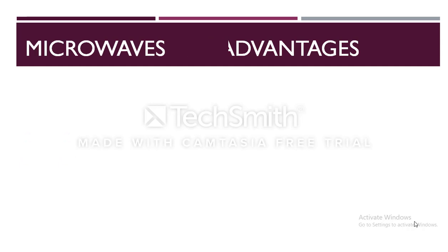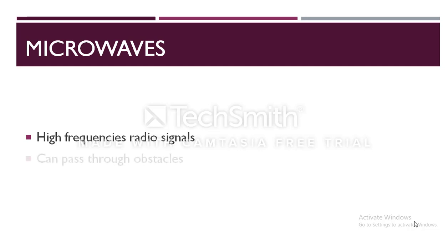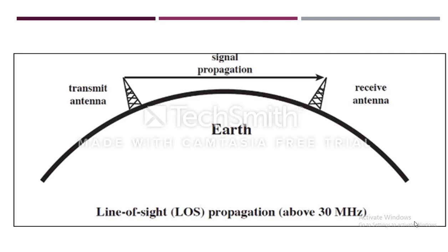Next is microwaves. Another popular transmission medium is the microwave, which permits data transmission rates of about 16 gigabits per second. This type of transmission uses high-frequency radio signals to transmit data through space. Like radio waves, microwaves can pass through obstacles like buildings, mountains, etc. Microwaves offer a line-of-sight method of communication. A transmitter and receiver of a microwave system are mounted on very high towers and both should be visible to each other.